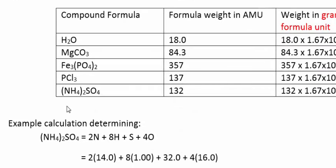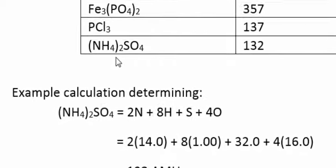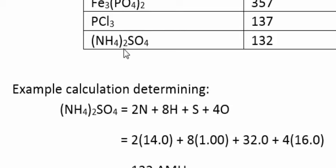Here I showed how I determined 132 for the last one, (NH4)2SO4. The two outside of the parentheses mean that there's two of the NH4 parts. So there's two nitrogens and eight hydrogens. Then there's one S and four oxygens.